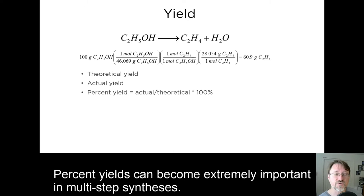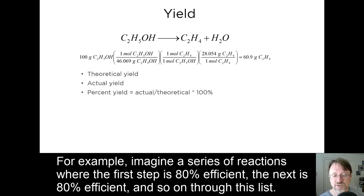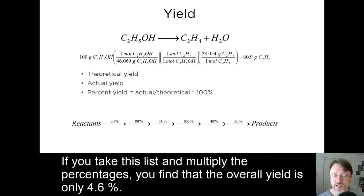Percent yield can become extremely important in multi-step syntheses. For example, imagine a series of reactions where the first step is 80% efficient, the next step is 80% efficient, and so on through the list. If you take this list and multiply the percentages, you find the overall yield is only 4.6%. This is one reason for high prices of some pharmaceuticals.